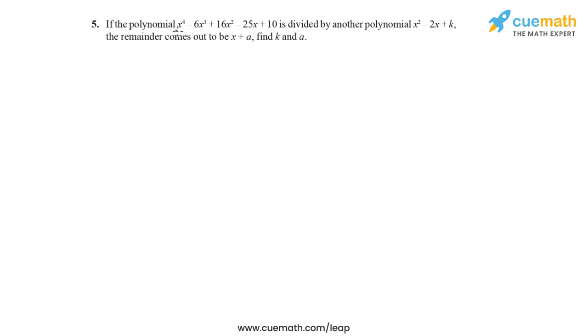Question 5 of this exercise: if a fourth degree polynomial is divided by another polynomial x squared minus 2x plus k, which is a quadratic polynomial, the remainder comes out to x plus a. Find k and a.